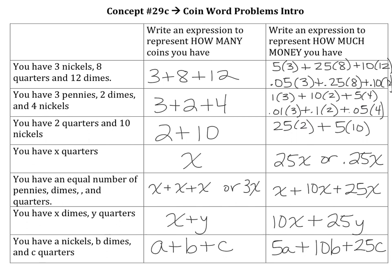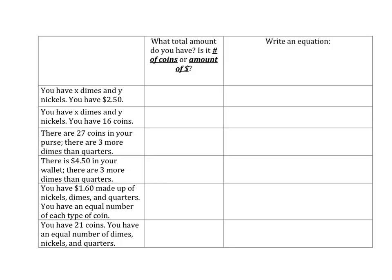If you wrote 1x for pennies, that's fine. If you're using decimals, you would write 0.01x for pennies, 0.10x or 0.1x for dimes, and 0.25x for quarters. My biggest point: if you're asked how much money you have, you have to assign the value of the coin to the expression. That's going to help when we're writing equations — go ahead and flip to the back.